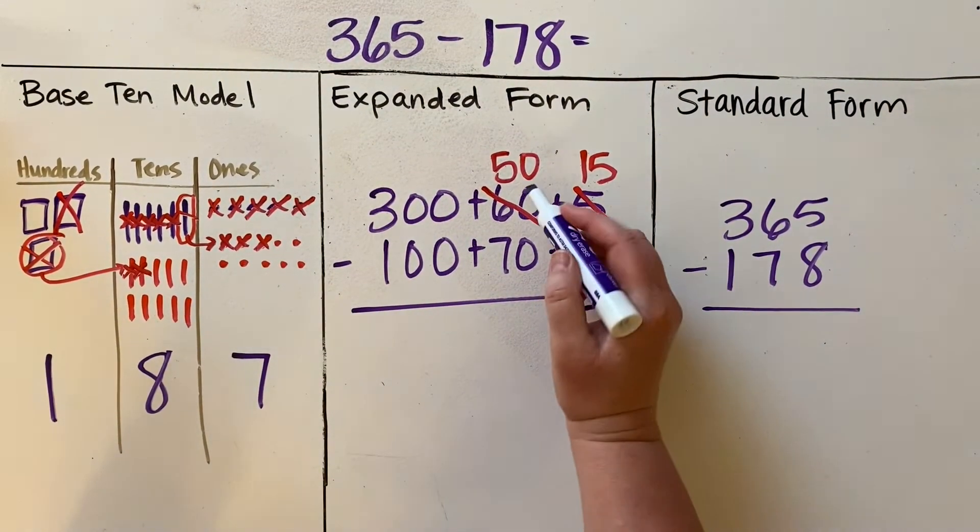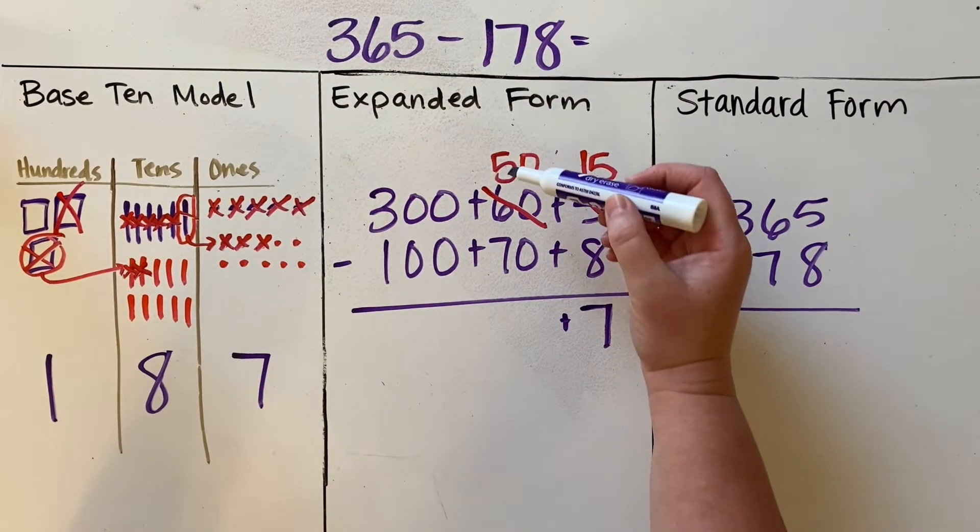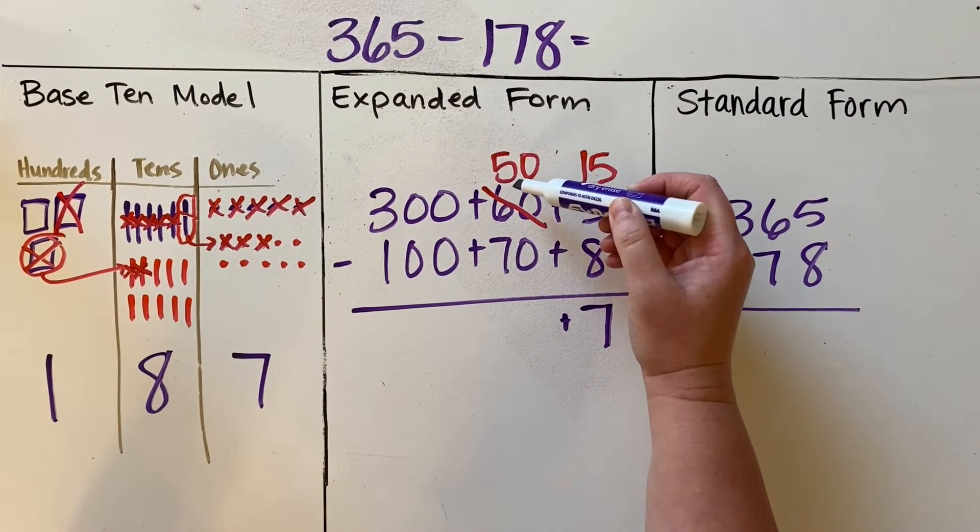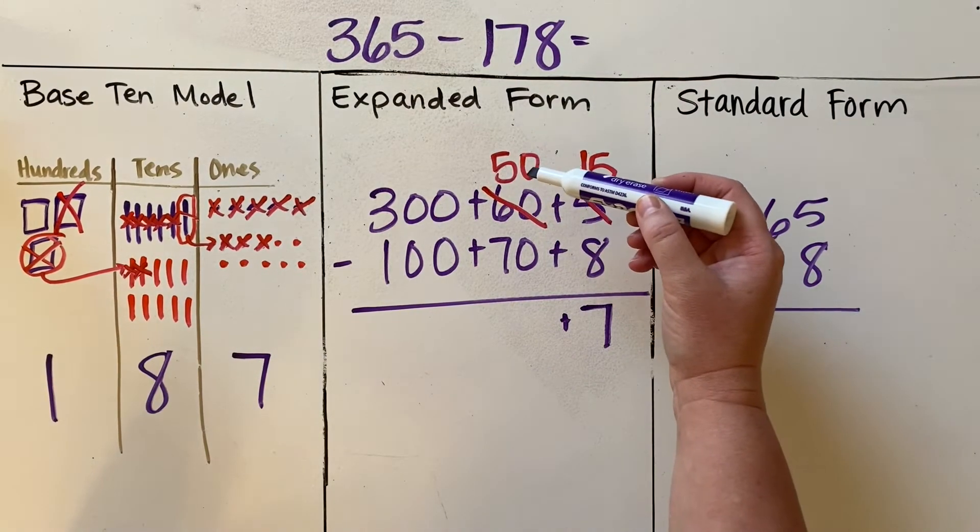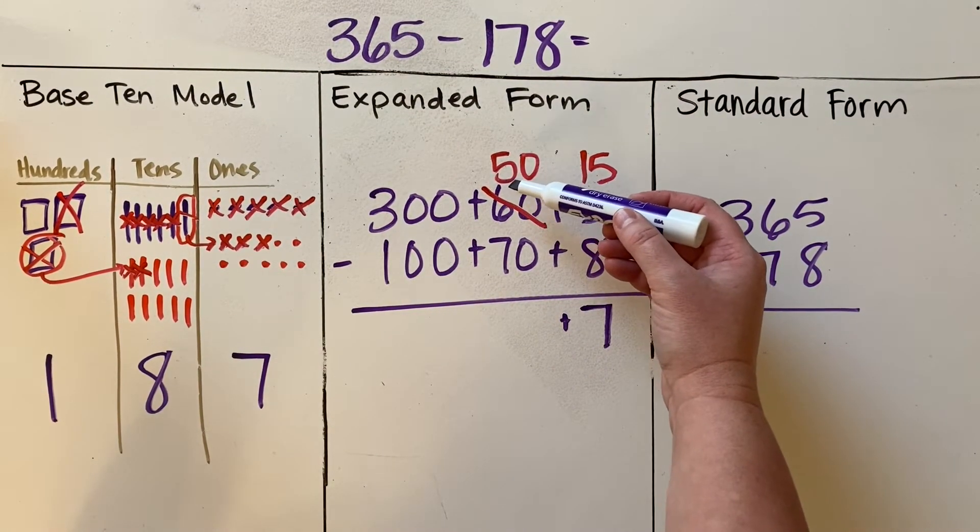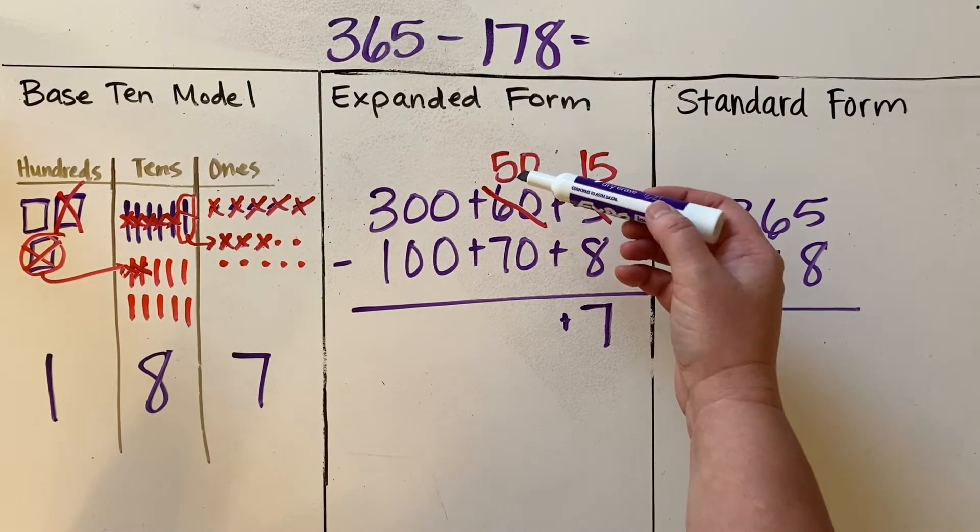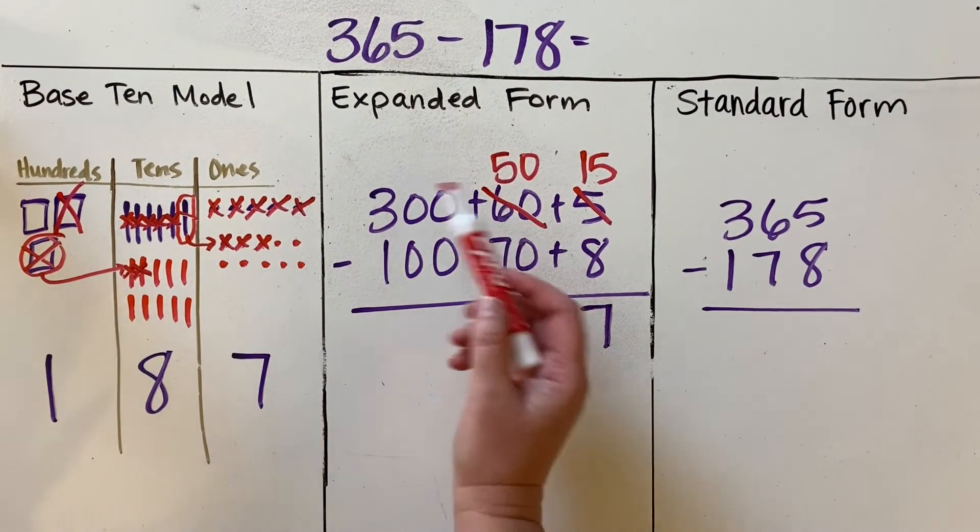And I look over to my tens place and do 50 minus 70. Again, 70 is larger than 50, and so I can't take it away from that. There's not enough to be taken away.